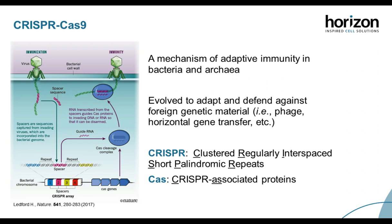So what are CRISPR-Cas systems? CRISPR-Cas as a term originated in 2002 to describe the bacterial immunity system evolved to defend against genetic parasites. CRISPR stands for clustered regularly interspaced short palindromic repeats, and CAS stands for CRISPR-associated proteins.